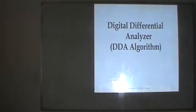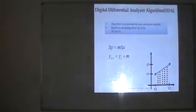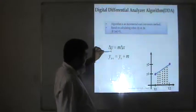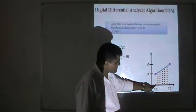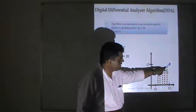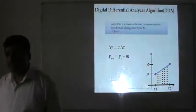Now let us start with the DDA algorithm — Digital Differential Analyzer. This incremental scan conversion method is based on calculating delta_y or delta_x, where m = delta_y / delta_x and delta_y = m * delta_x. Since we know the first point, the rest of the points are found by: y_{k+1} = y_k + m.